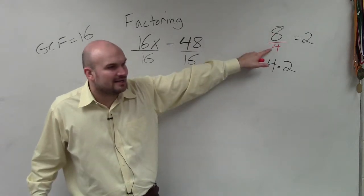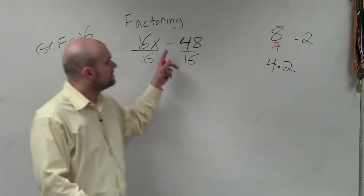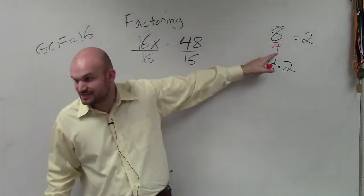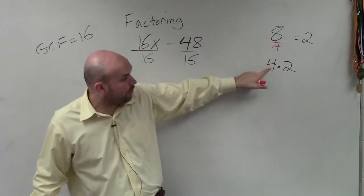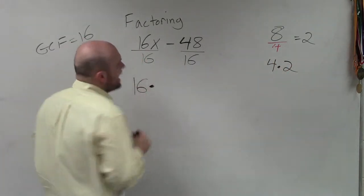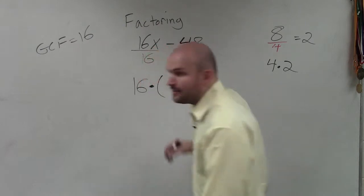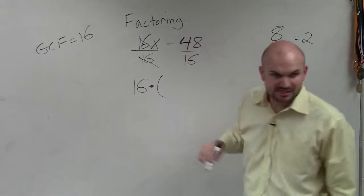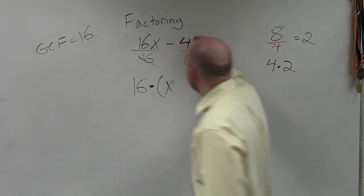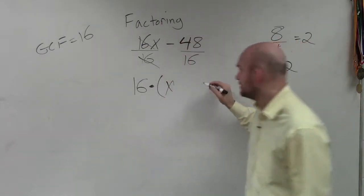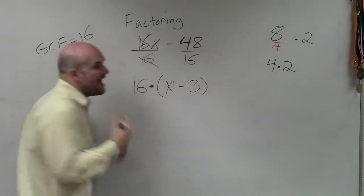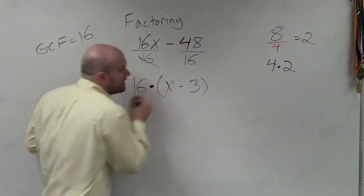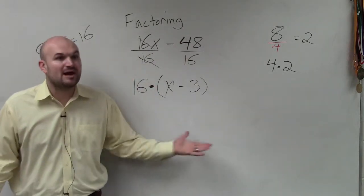I'm going to take my number and divide it by its factor. So I divided by 16, and I'm going to write that as 16 times — and since we have an expression, I put it in parentheses. 16x divided by 16 leaves you with x, and negative 48 divided by 16 leaves you with negative 3. So I have rewritten 16x minus 48 as the product of two expressions.